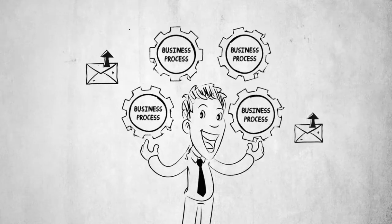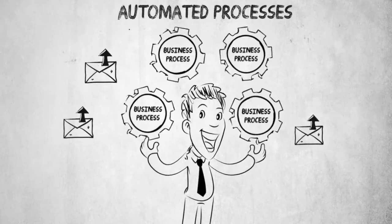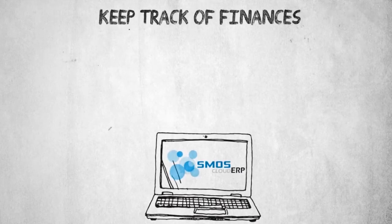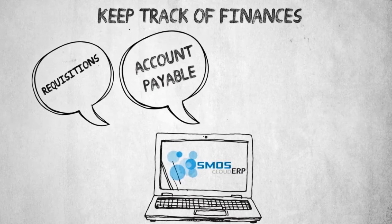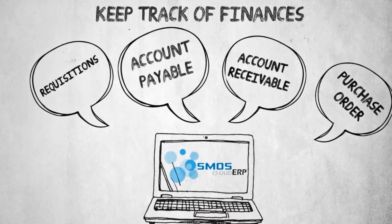You'll be able to reduce business errors with Osmos' automated processes and notifications. You'll administrate and keep track of finances through requisitions, accounts payable, accounts receivable, and purchase order modules.